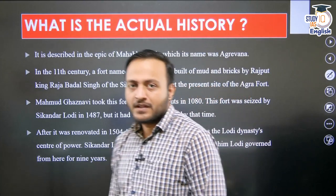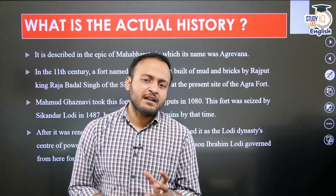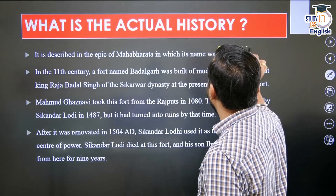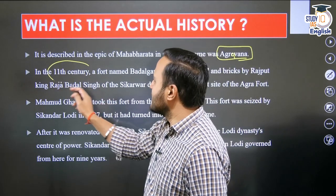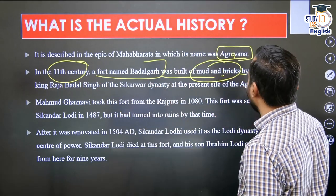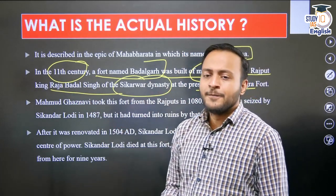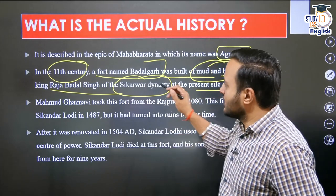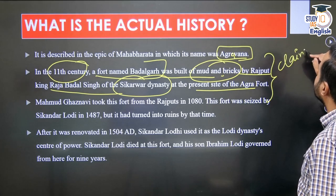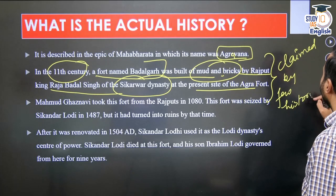Agra was described in the Mahabharata as a place called 'Agra-vana.' In the 11th century, a fort named Badalgarh, built of mud and bricks by the Rajput king Raja Badal Singh of the Sikharwal dynasty, is claimed to have existed at the present site of Agra. However, this remains a claim by a few historians and is not fully established as historical fact.